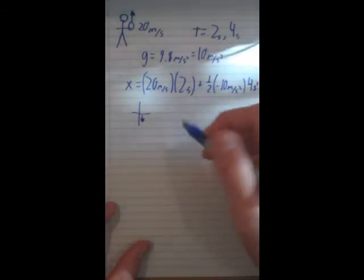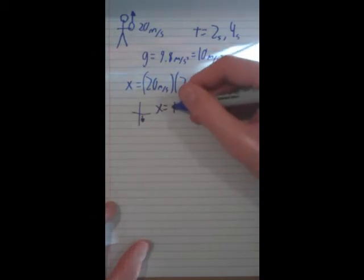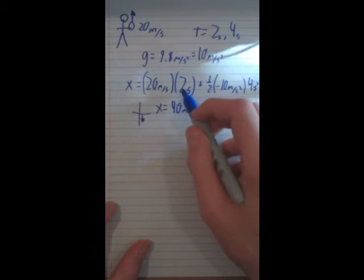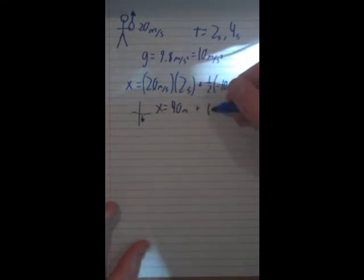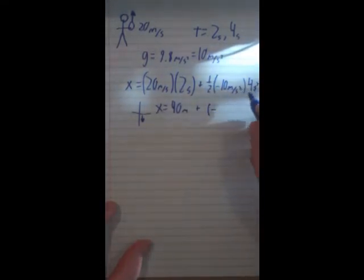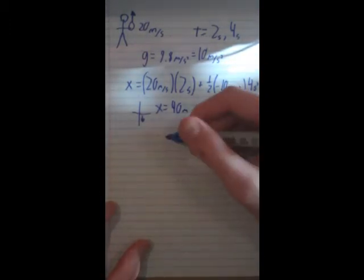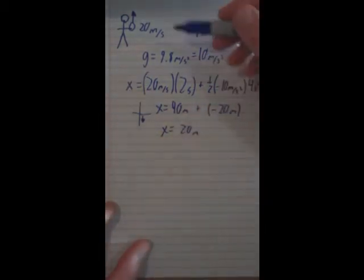So let's just multiply this out. So x is going to equal 40 meters, because that's how far it would initially go. And then we're going to have to see plus the effects of gravity, which are going to be plus negative 20 meters. And that's just gotten by all these multiplying out. So after 2 seconds, it will be 20 meters, 20 meters above our head.